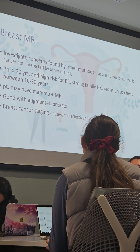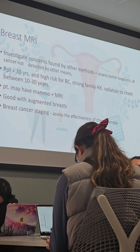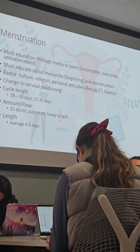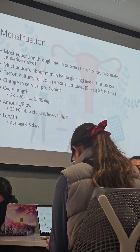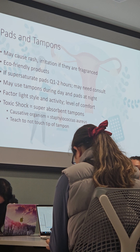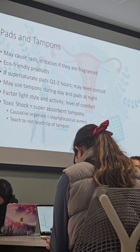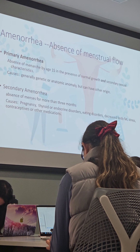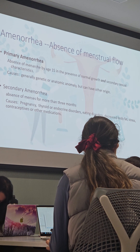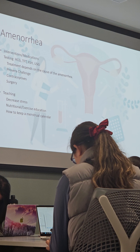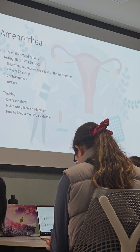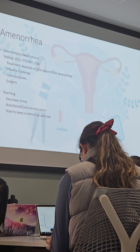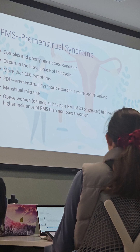Know who would probably benefit from an MRI, so definitely know when you would recommend a breast MRI. Also basic education about menstruation — things around toxic shock syndrome, keeping sanitary during menstruation. Know the differences between the different types of bleeding disorders, especially how you would manage them — interventions and teaching around amenorrhea, dysmenorrhea, and PMS.